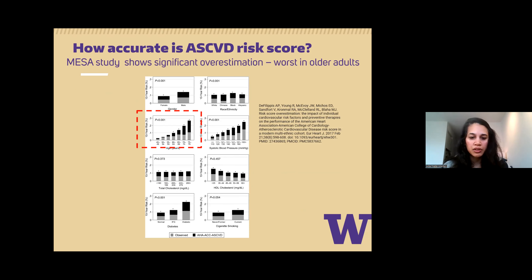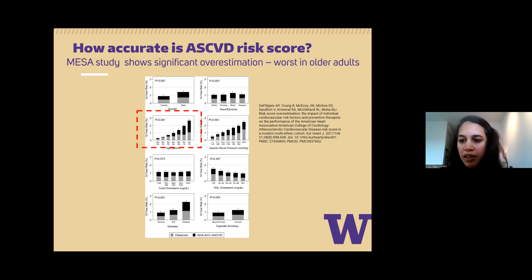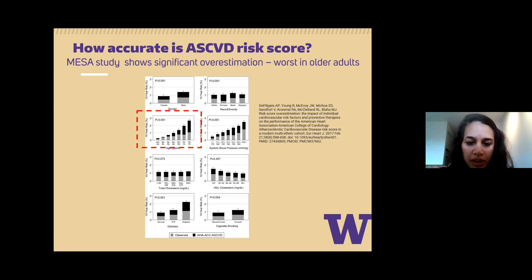I want to focus on the red box on this slide. We often wonder: if we put a 75-year-old man into the ASCVD risk score, his risk will be elevated no matter what. And that is true — there is significant overestimation. The light-colored bar is observed risk and the whole bar is the risk predicted by the ASCVD risk score, and there's a significant overestimation that gets worse particularly at older ages.